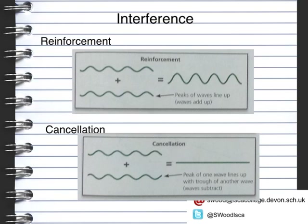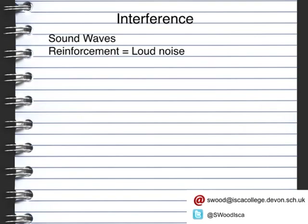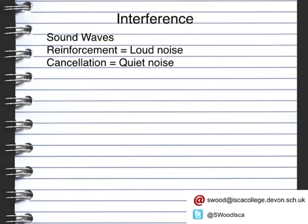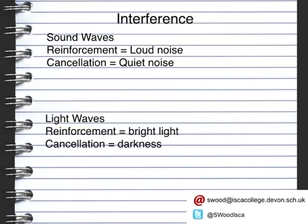With sound waves, if you had reinforcement you would end up with a loud noise, whereas if you had cancellation you would end up with a quiet noise. At pop or rock concerts, if you walk across or past the stage past the speakers, you might find areas where it's very loud and then areas where it is very quiet. With light waves, reinforcement gives a bright light and with cancellation you end up with darkness — light and dark patches of light.